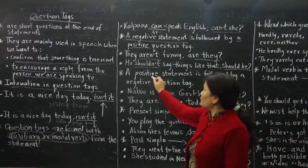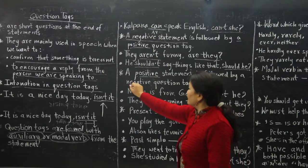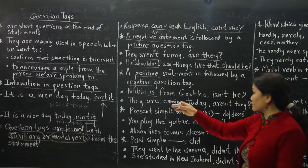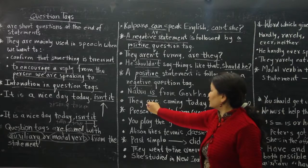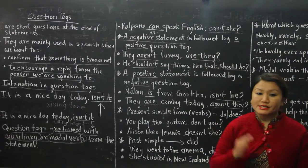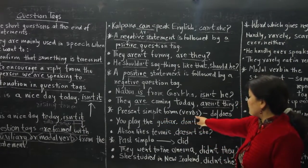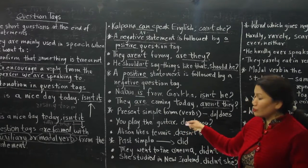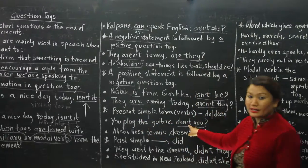Conversely, a positive statement is followed by a negative question tag. For example: 'Naveen is from Gurkha, isn't he?' — positive statement, negative tag. 'They are coming today, aren't they?' For present simple tense, 'do' and 'does' are used in the question tag. 'You play the guitar, don't you?' — 'do' introduces the tag. 'Allison likes tennis, doesn't she?' — third person singular, so 'doesn't' is used.